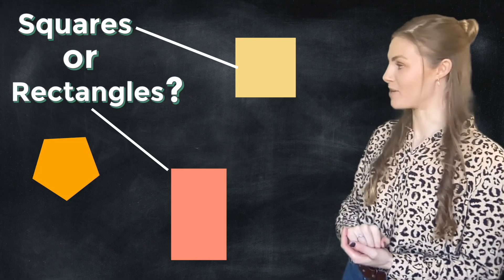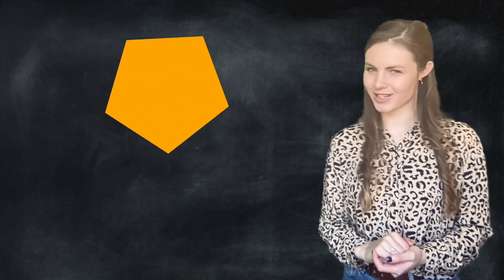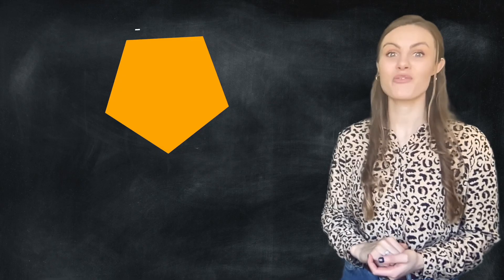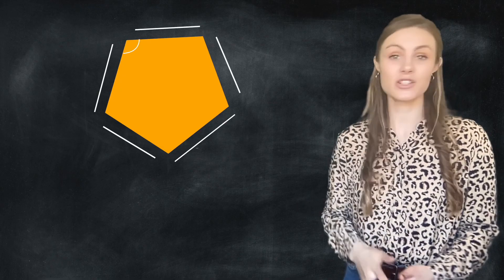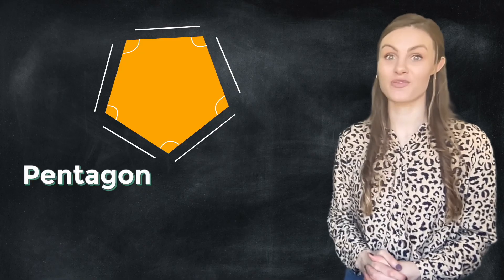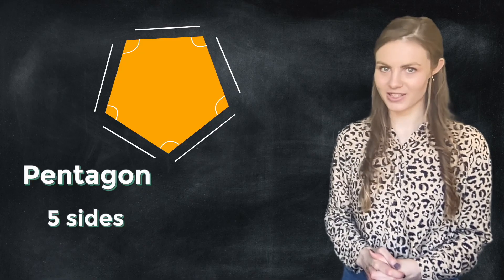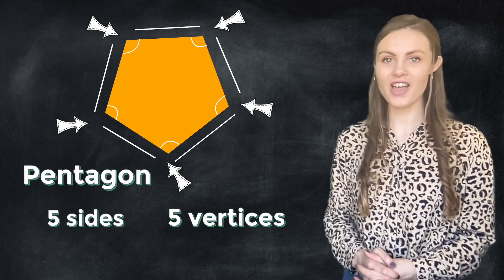But did you notice the one in the middle? I was trying to catch you out. Did it work? It actually has five sides. So although they're all the same length, it's got five, so it's not a square. It's also not a rectangle. This shape is called a pentagon. It has five sides. And you might have noticed it also has five vertices.